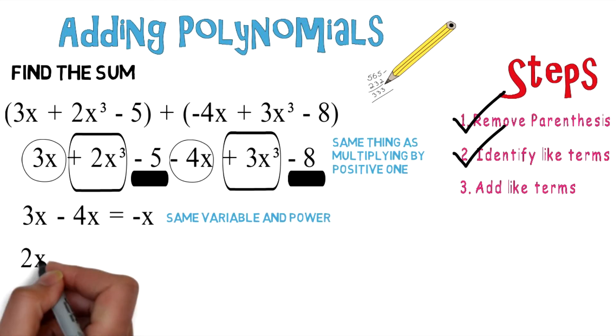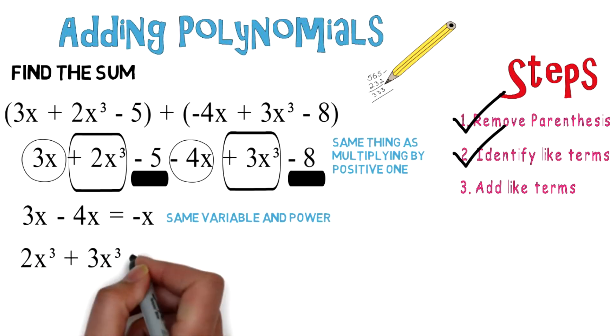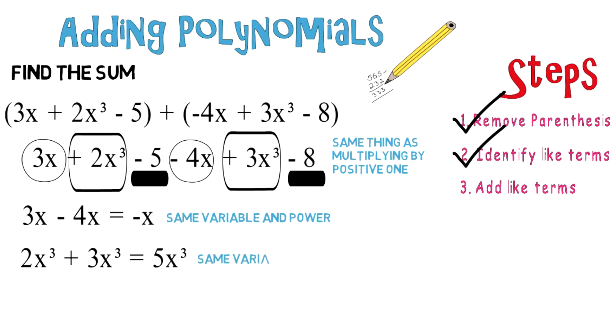You also have 2x to the third power plus 3x to the third power, which is going to give you 5x to the third power. You're able to do that because they have the same variable and power.